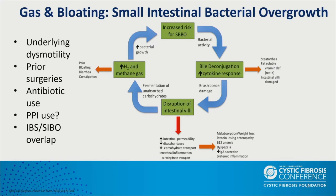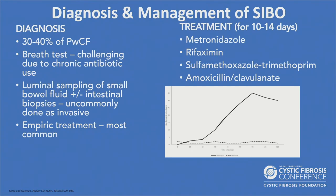SIBO also causes B12 anemia, dyspepsia, upper abdominal pain, bloating, decreased IgA secretion, and systemic inflammation. Fermentation of unabsorbed carbohydrates leads to increased hydrogen and methane gas, and more pain, bloating, diarrhea, and constipation — with significant overlap with the IBS diagnosis. Studies have shown that 30 to 40% of people with CF have SIBO.